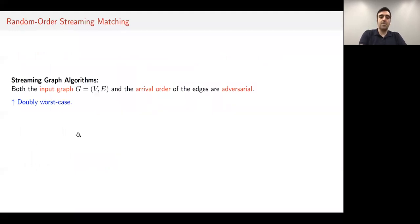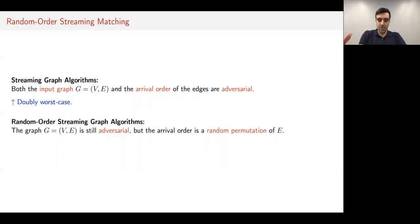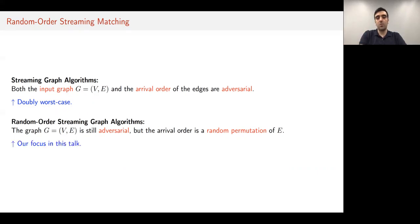This streaming model is in some sense doubly worst case, because not only is the graph picked by an adversary, but the arrival order of the edges is also adversarial. There's another natural model called the random order streaming model, where the graph is still adversarial but the edges arrive in a random order—that is, the arrival order is a random permutation of the edge set. This is what we will focus on today.